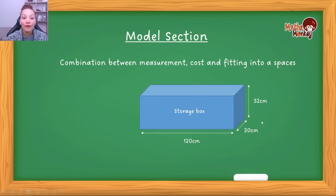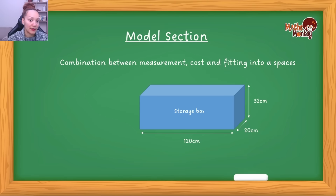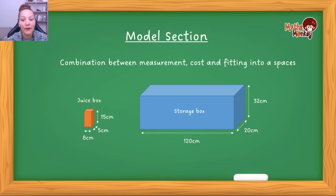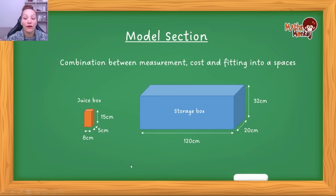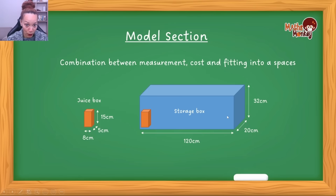I'm going to show you by just using an example the gist of this model section. So let's say we have this storage box with these dimensions, and we have another box — let's say this is a juice box. We would like to package this juice box into the storage box so that we can actually deliver it to a store. This is a typical model type question.